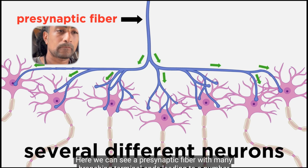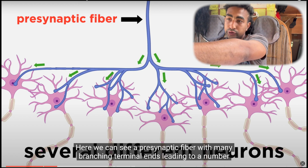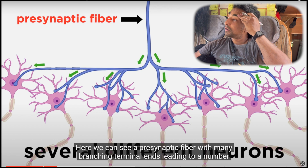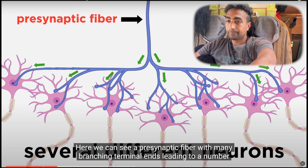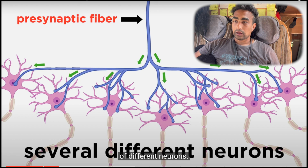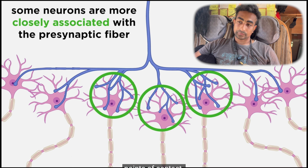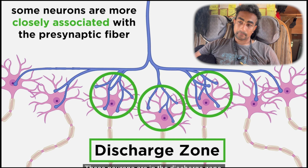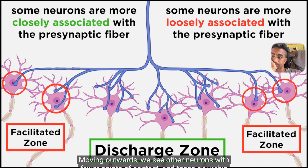Here we can see a pre-synaptic fiber with many branching terminal ends. Some neurons are more closely associated with the pre-synaptic fiber, as there are many more points of contact — these neurons are in the discharge zone.